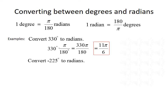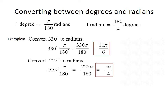Next, we want to convert negative 225 degrees into radians. We start with negative 225 degrees and multiply by π divided by 180. That gives us negative 225π over 180. We can cancel 45 out of both numerator and denominator, which reduces our fraction to negative 5π over 4.